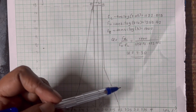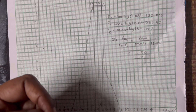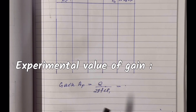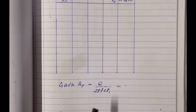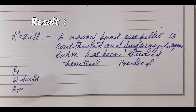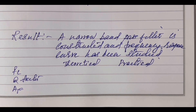Take your own readings, do tabulations, and calculate the quality factor from your graph. With the Q value from the graph and the expression for R1, substituting Q gives the practical value of AF using the formula Q divided by (2π·Fc·C·R1). The result is that a narrow band pass filter is constructed and its frequency response curve has been studied. Record both theoretical and practical values of Fc, Q factor, and AF. Do not be disappointed over the difference between theoretical and practical values. Good luck.